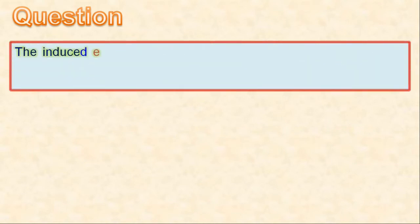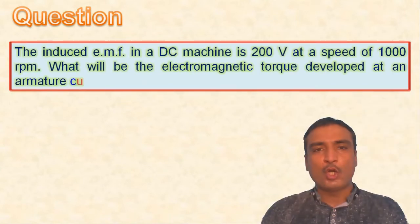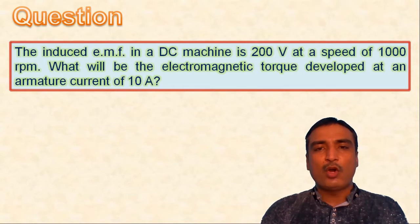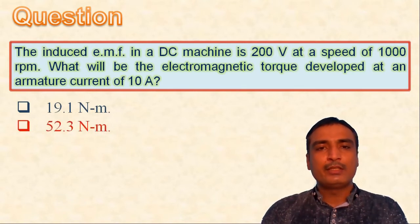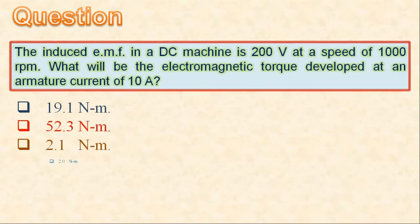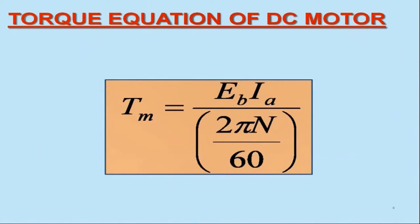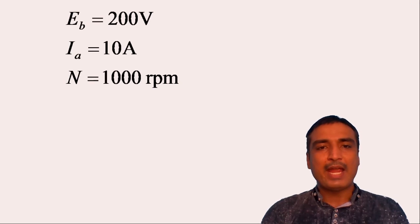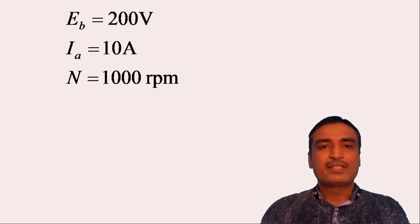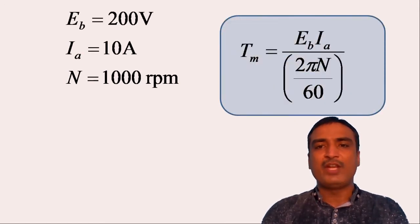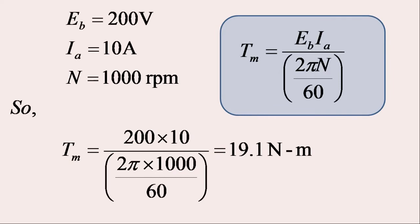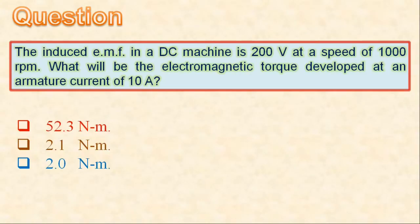Next question: the induced EMF in a DC machine is 200 volts at a speed of 1000 rpm. What will be the electromagnetic torque developed at an armature current of 10 ampere? Options: 19.1 N·m, 52.3 N·m, 2.1 N·m, or 2 N·m. Recalling the torque equation of the DC motor, with EB = 200 V, IA = 10 A, and N = 1000 rpm, the developed electromagnetic torque is 19.1 newton meter. So the first option is correct.